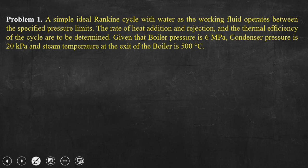Let us first read out the problem statement. A simple ideal Rankine cycle with water as the working fluid operates between specified pressure limits. The rate of heat addition and rejection and the thermal efficiency of the cycle are to be determined. Given: boiler pressure is 6 MPa, condenser pressure is 20 kPa, and steam temperature at the exit of the boiler is 500°C.